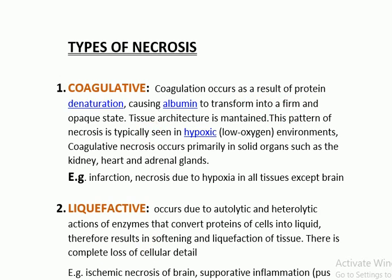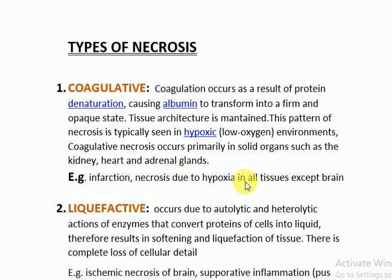Tissue architecture is maintained. This type of necrosis is usually seen in hypoxic environments where there is low oxygen and deficient blood supply. Coagulative necrosis occurs primarily in solid organs such as the kidney, heart, and the adrenal glands. The classic example is infarction — necrosis due to hypoxia in all tissues except the brain.